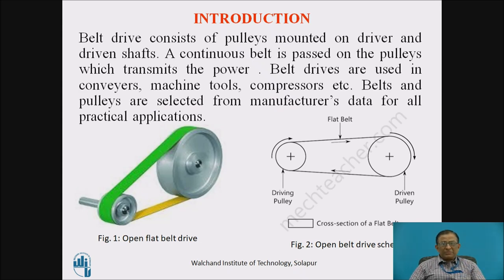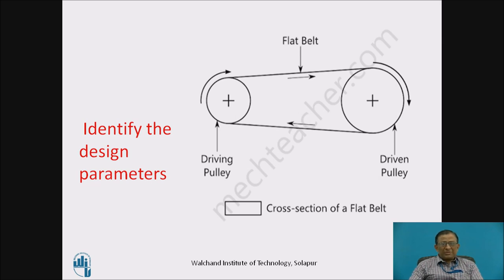The belt drive consists of pulleys mounted on driver and driven shafts, and a continuous belt passed on the pulleys which transmits the power. Belt drives are extensively used in many industrial applications like conveyors, machine tools, compressors, blowers, etc. Belts and pulleys being standard mechanical elements are required to be selected from manufacturer's data for all practical applications. Power is transmitted by friction between the pulley and the belt.